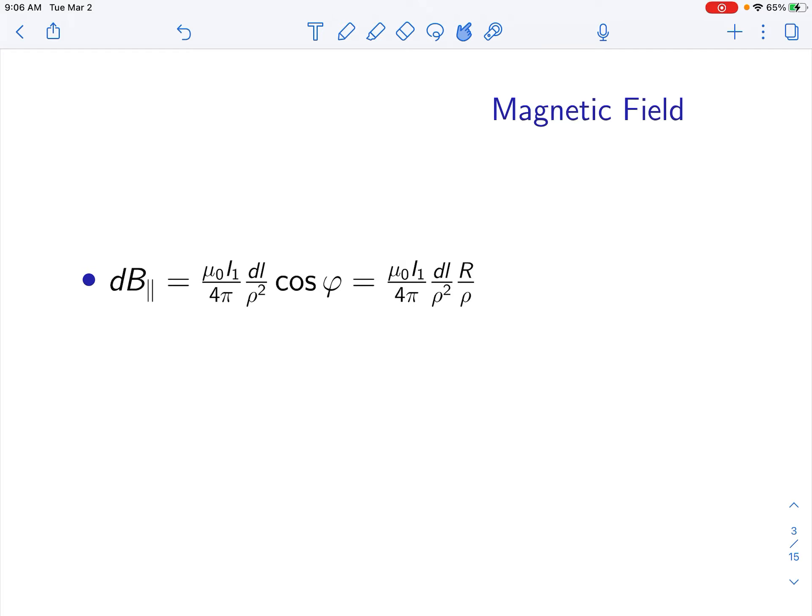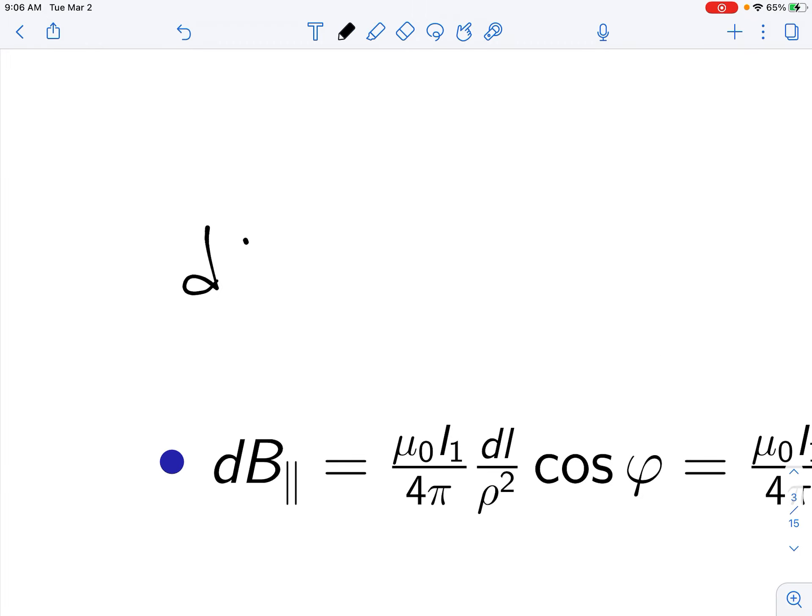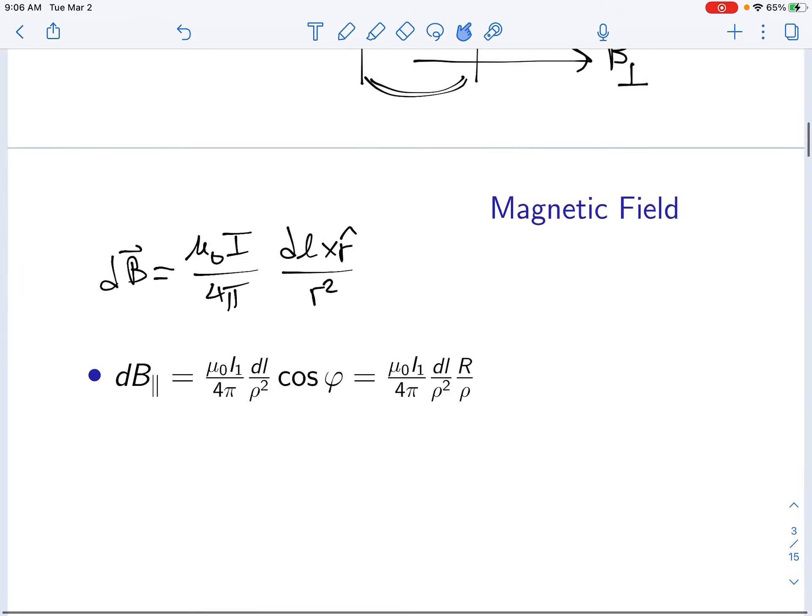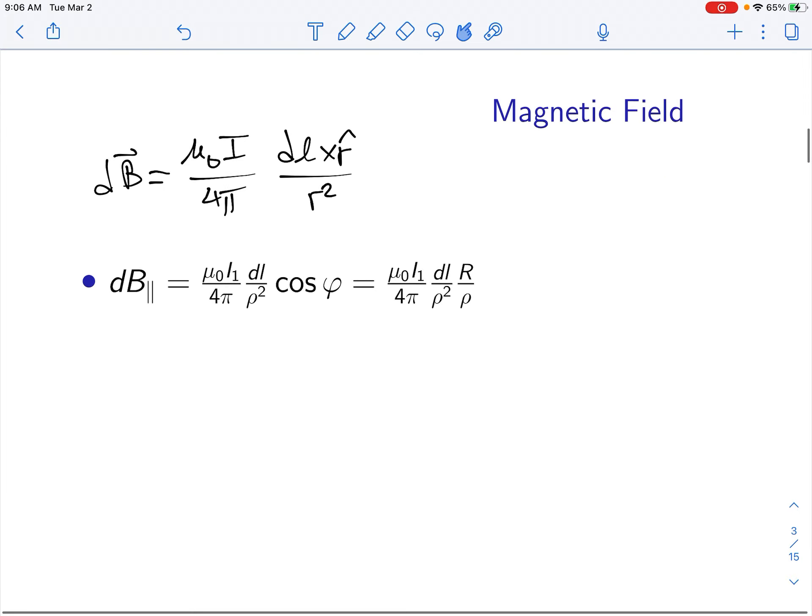By Biot-Savart law, we're going to use that. The infinitesimal quantity of the magnetic field is going to be μ₀I over 4π, and then you multiply this by dL times the vector quantity of r-hat over r squared.